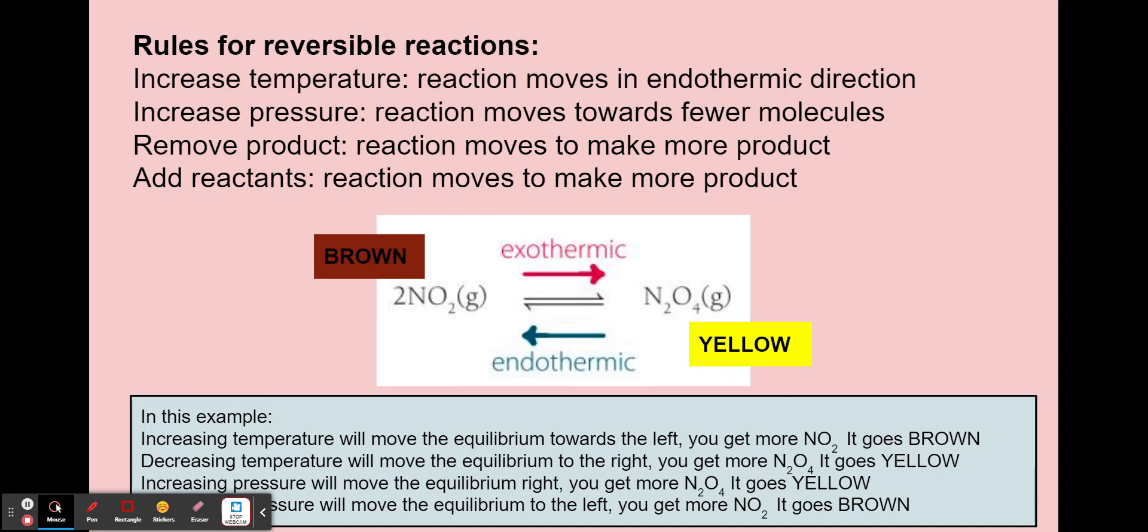We said pressure moves towards fewer molecules. So if you increase the pressure, the reaction goes to the right, you'd see yellow. If you decrease the pressure, the reaction will go to the left, you'd see brown.